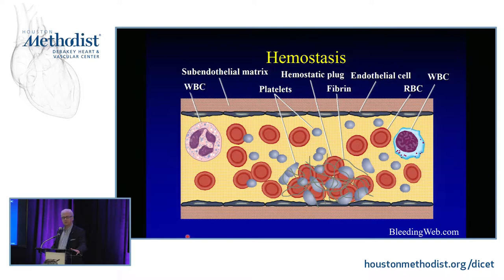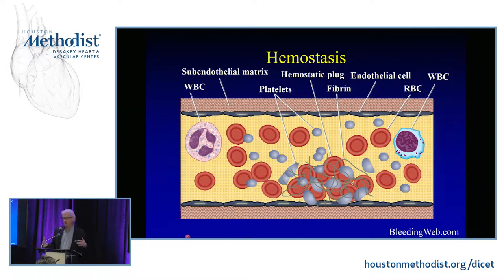After extracorporeal circulation, major traumatic injury, and massive transfusion coagulopathy, the perturbations that occur are very complex, especially after extracorporeal circulation. Furthermore, our patients with cardiovascular disease are on a multitude of agents that inhibit either thrombin, platelets, or both. Atrial fib, coronary disease, stents — all these things greatly influence bleeding and coagulation.